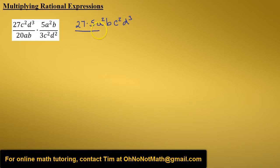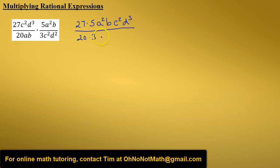Now for the denominator: we have 20 times 3, then ab and c²d².